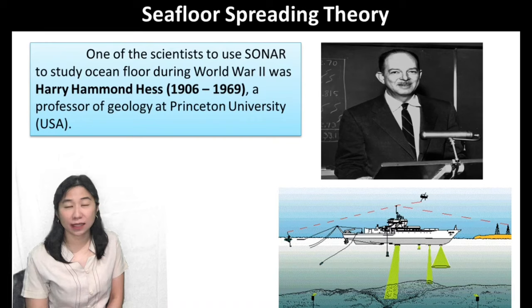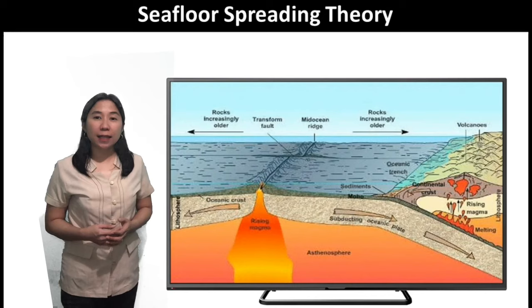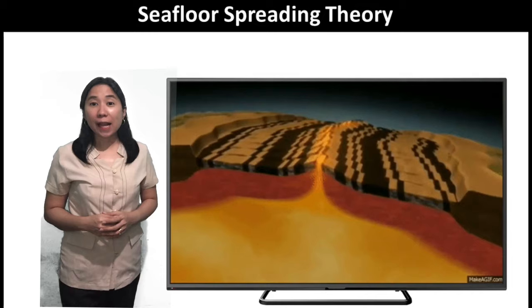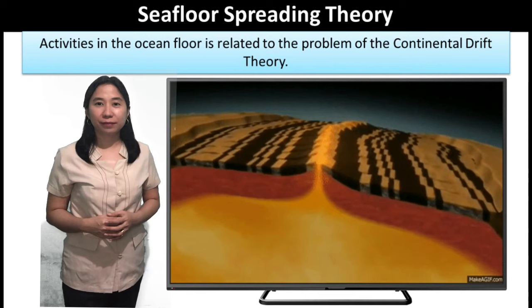Harry Hammond Hess and his team carefully examined maps of the mid-ocean ridge system. Hess began to think about the ocean floor in relation to the problem of Continental Drift Theory, and that led him to the idea of seafloor spreading.